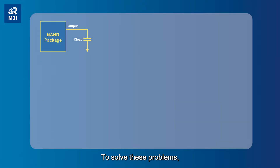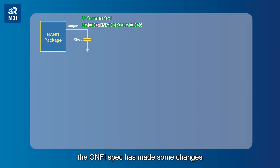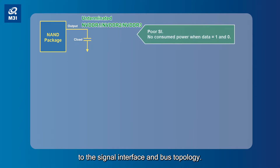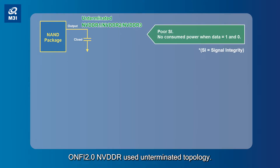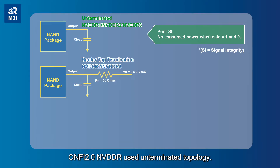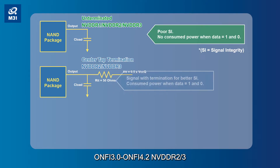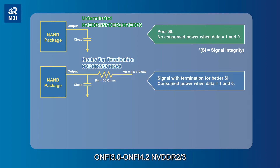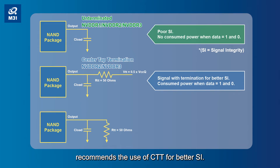To solve these problems, the ONV spec has made some changes to the signal interface and bus topology. ONV 2.0 NVDDR uses unterminated topology. ONV 3.0 to ONV 4.2 NVDDR 2/3 recommends the use of CTT for better signal integrity.